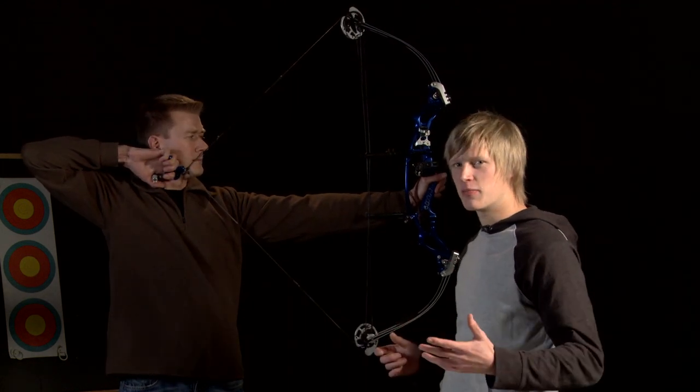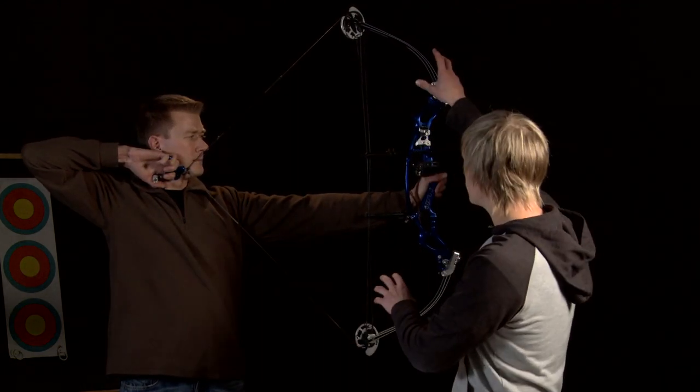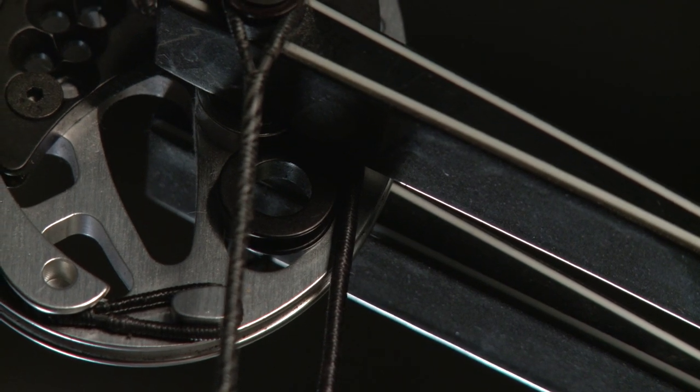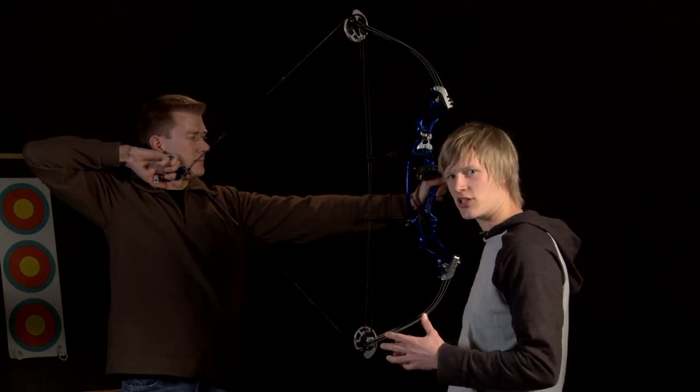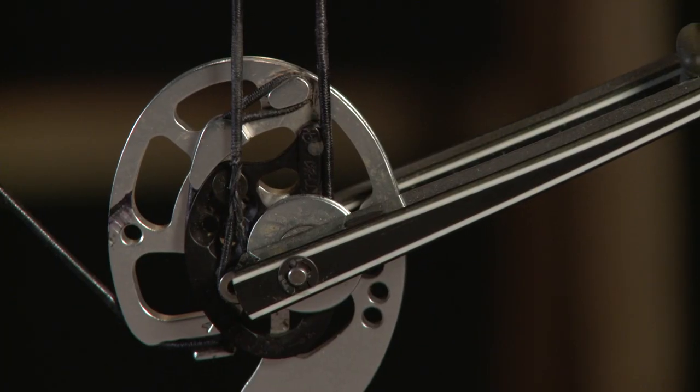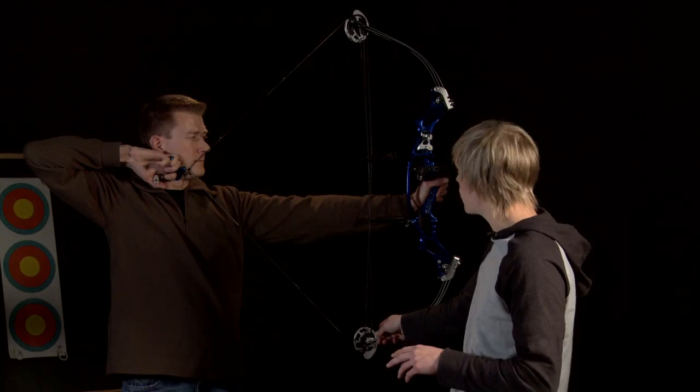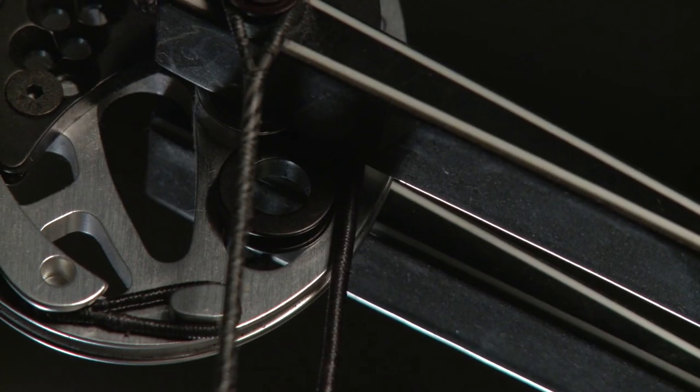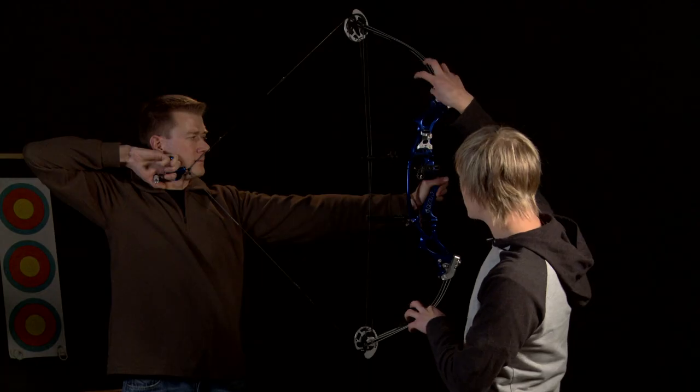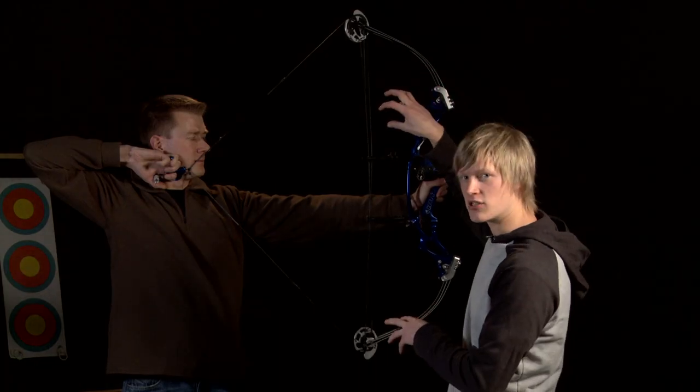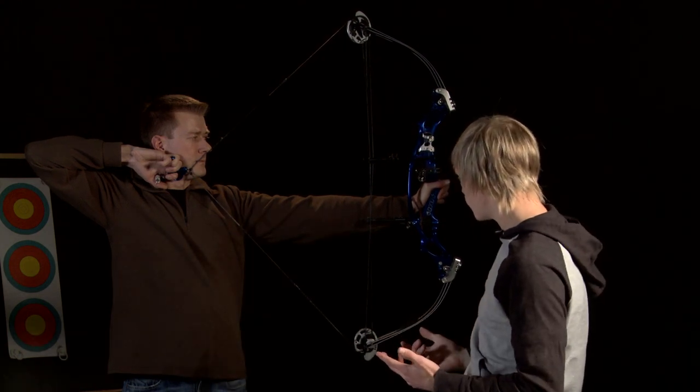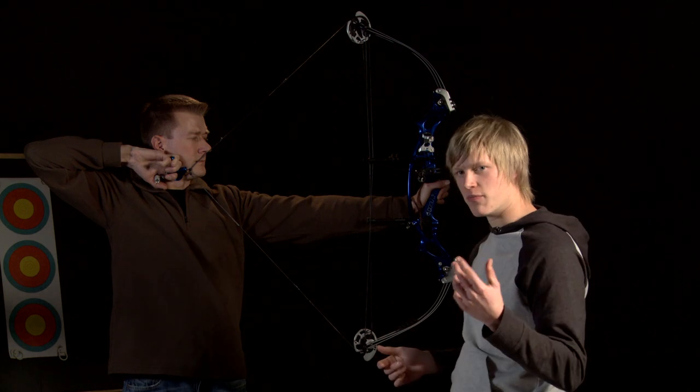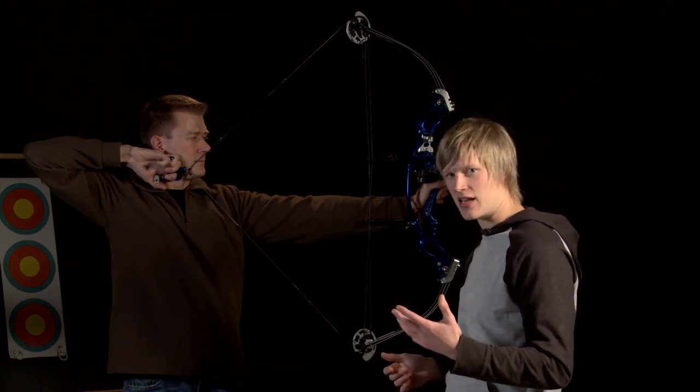You'll notice that as Neil pulls the bow back, the cams rotate. Now, as the cams rotate, the black modules also rotate, which are attached to them. Now, as the modules rotate, the flat spots on the bottom and on the top should turn around and hit the cable, which actually causes the bow to stop.